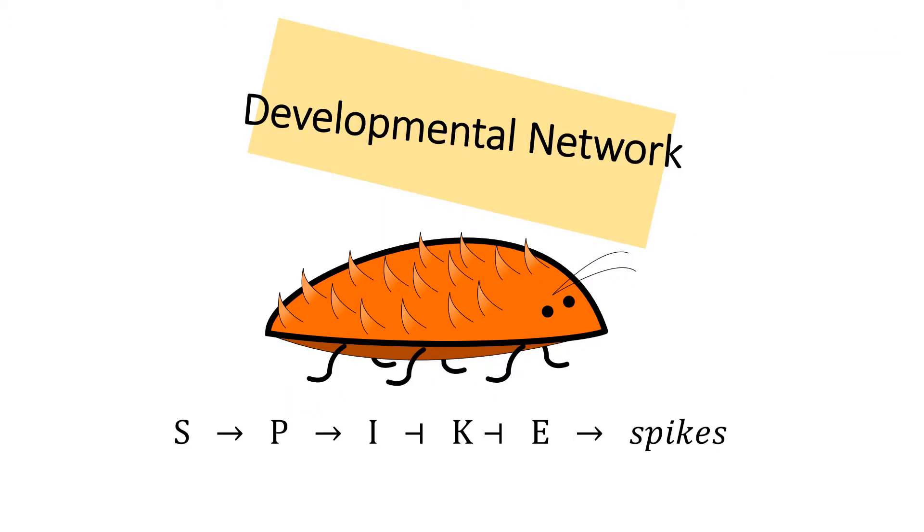The hypothetical developmental network consists of genes S, P, I, K, and E which result in protein production that leads to a spike, or no such protein production and thus no spike.